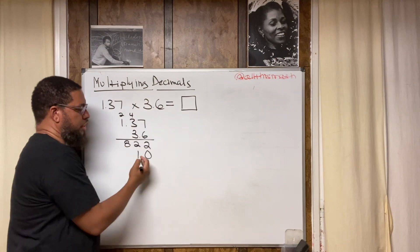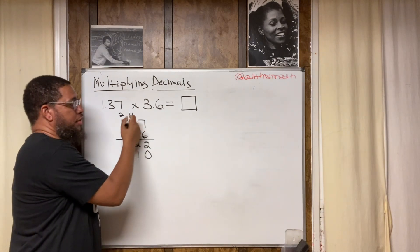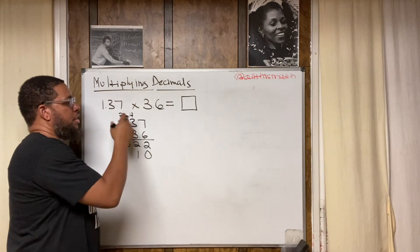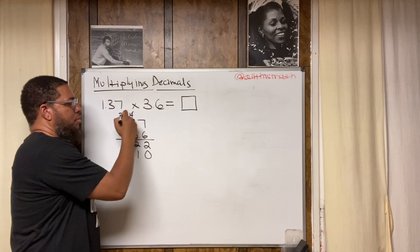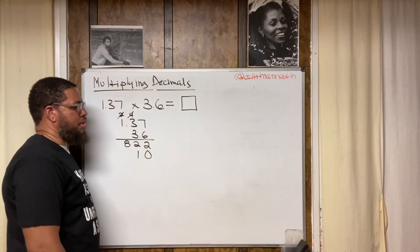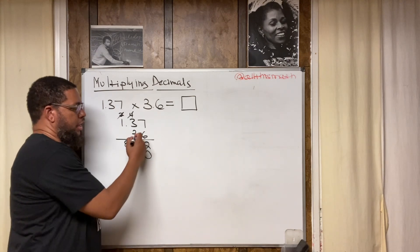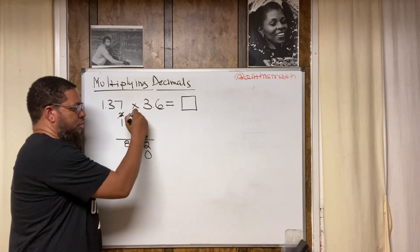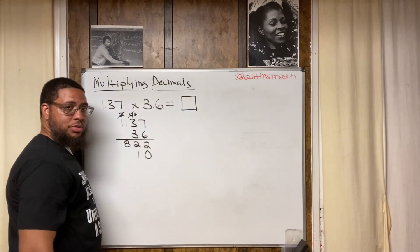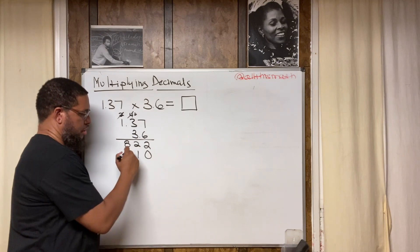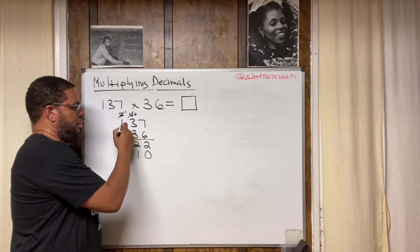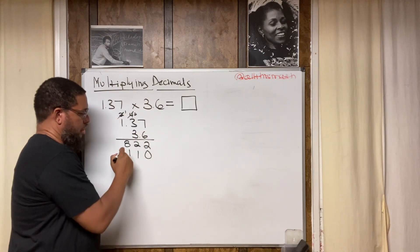So: 3 times 7 is 21 — write the 1 and carry the 2. Then 3 times 3 is 9, plus 2 is 11 — write the 1 and carry the 1. Then 3 times 1 is 3, plus 1 is 4. I recommend crossing out carried numbers once you've used them so you don't get confused. The second partial product is 411, shifted one place to the left. Now we draw a line and add: 2 plus 0 is 2, 2 plus 1 is 3, 8 plus 1 is 9, and 0 plus 4 is 4. A blank space represents 0. So we get 4932.